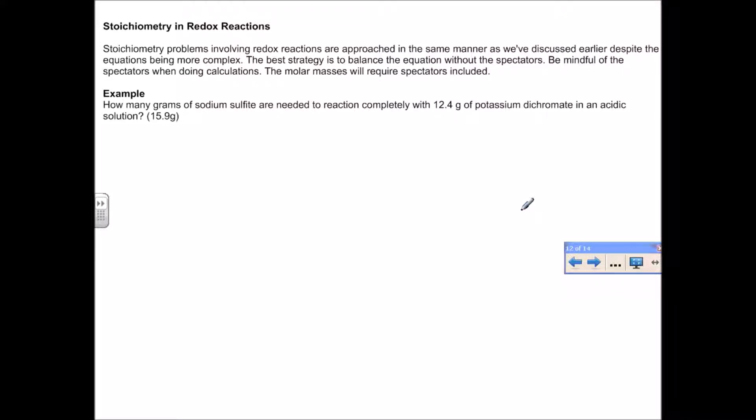Looking at stoichiometry and redox reactions and titrimetry in redox reactions. The basics of balancing have already been done, and now we're applying it using stoichiometry. When doing stoichiometry with redox reactions, it's pretty much the same in terms of the ratio. What you need to be mindful of is the spectator ions. I always find it easier to balance the reactions without the spectators, then when doing stoichiometry, be mindful of the spectators because the molar masses you use will need the spectators.